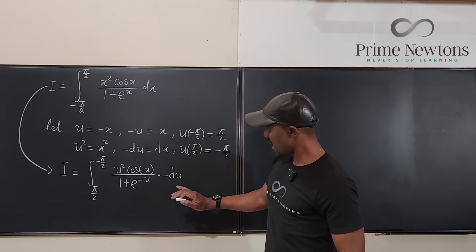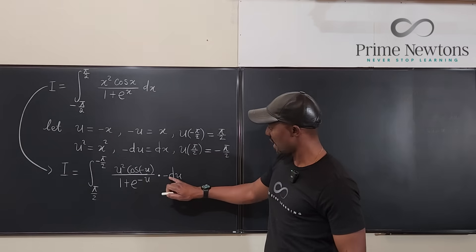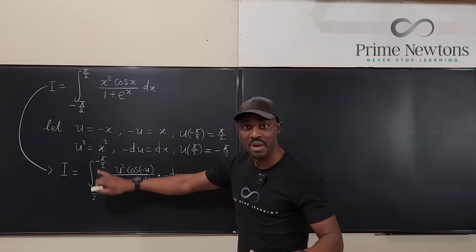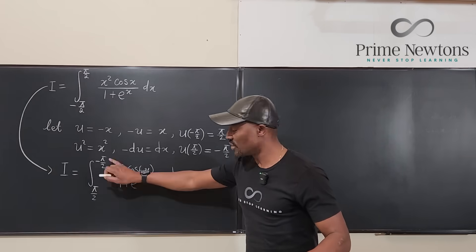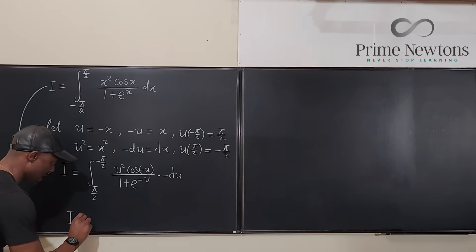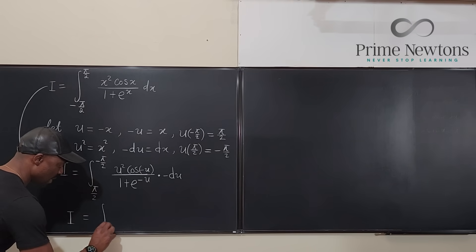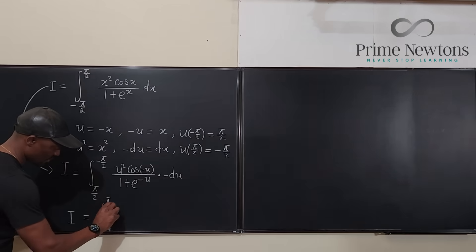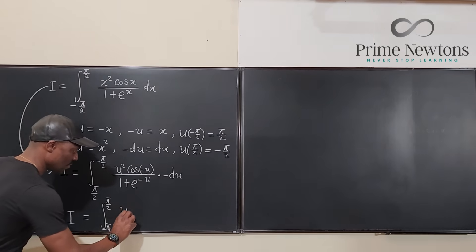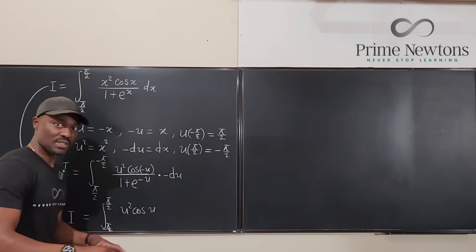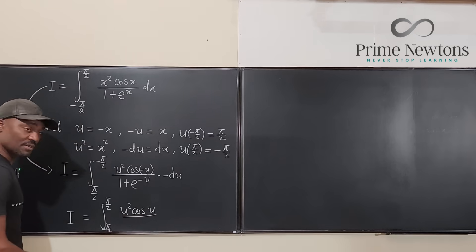I'm going to go here and say this negative du can go all the way back here or I might as well use that negative to flip the boundaries of integration or the limits of integration. So I'm going to say that this I could actually be written as this would be from negative π/2 to π/2 and then you're going to have u squared cosine u because cosine negative u is the same thing as cosine u because cosine is an even function.